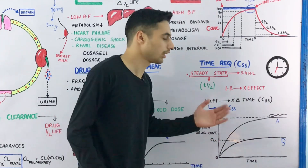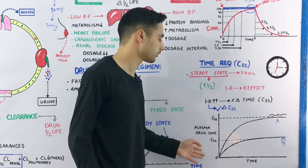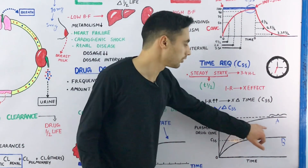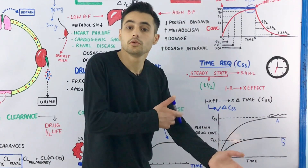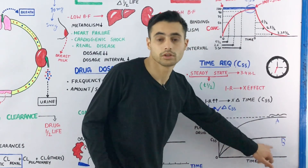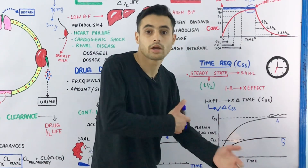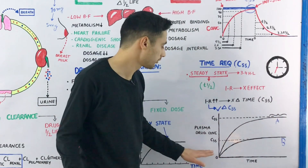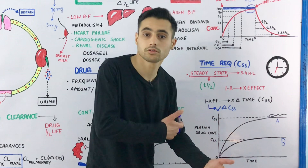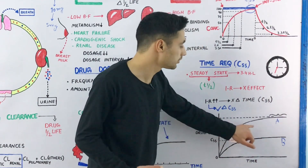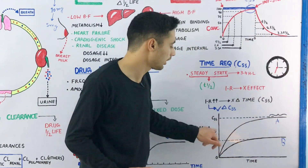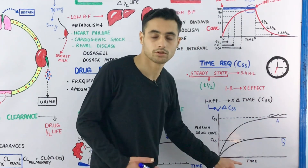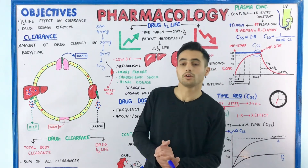Have a look at this graph — time on the x-axis, plasma concentration on the y-axis — comparing drug A and drug B. Drug A has a higher infusion rate than drug B, so its steady state concentration is higher. However, the time required to reach steady state is the same for both drug A and drug B. This illustrates the half-life effect on clearance and drug dosage regimen.